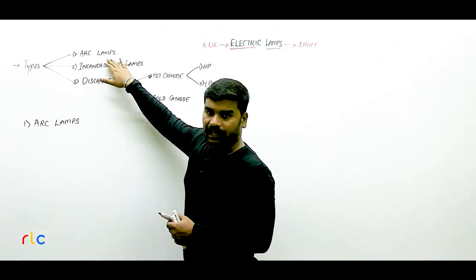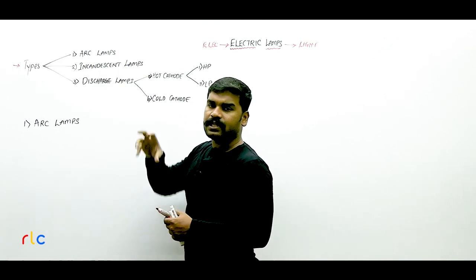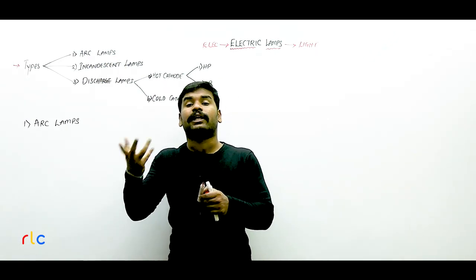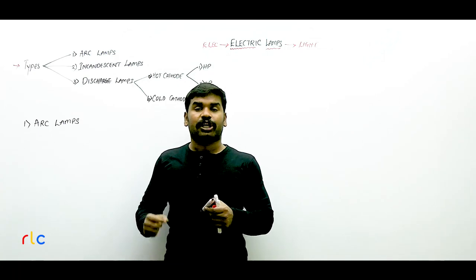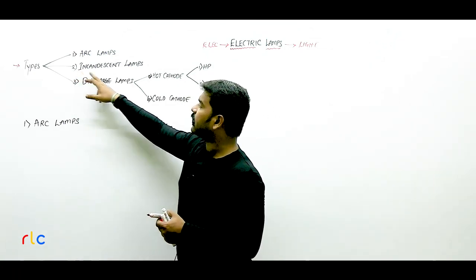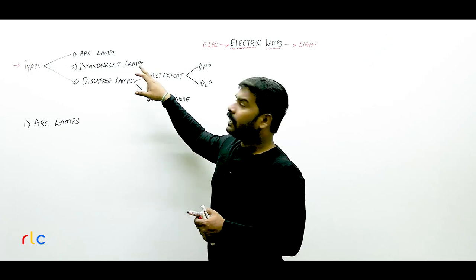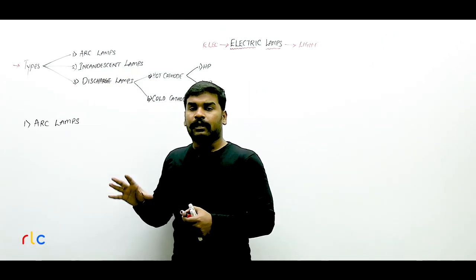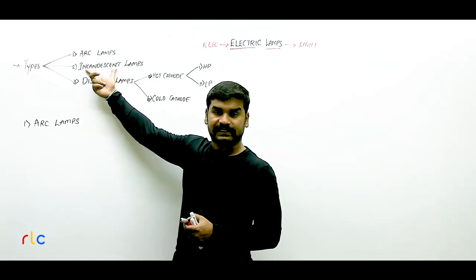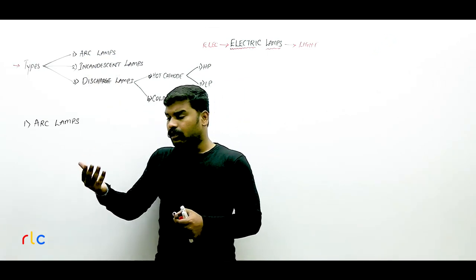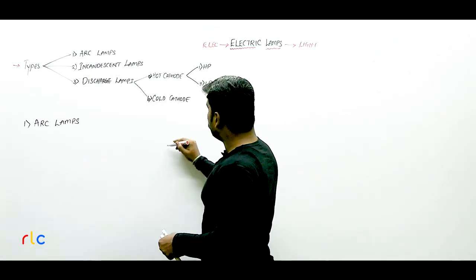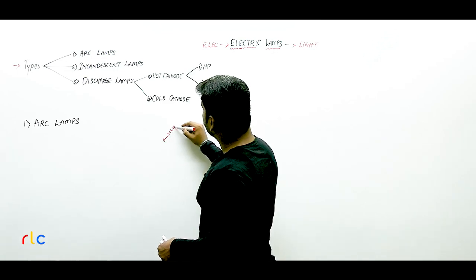Electric lamps are primarily classified in three ways. The first classification is arc lamps — the source of light in this lamp is through the generation of an electric arc. The second one is the incandescent lamp, which works on a principle called incandescence.